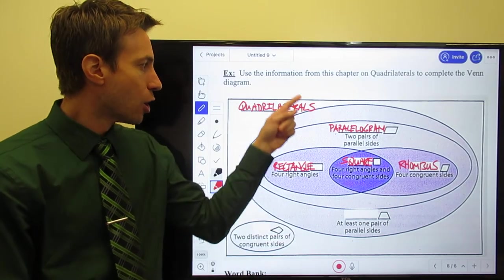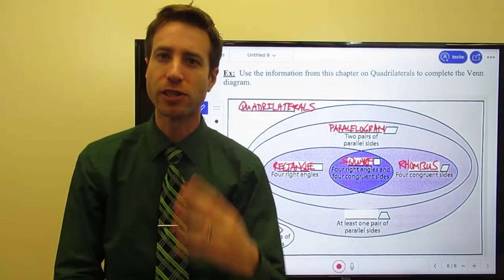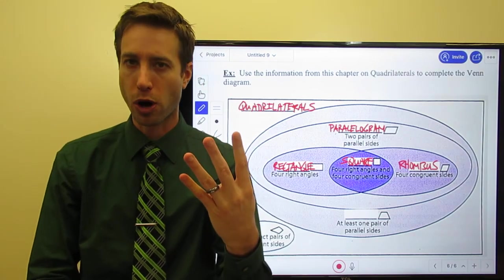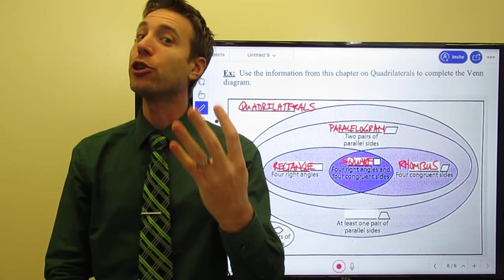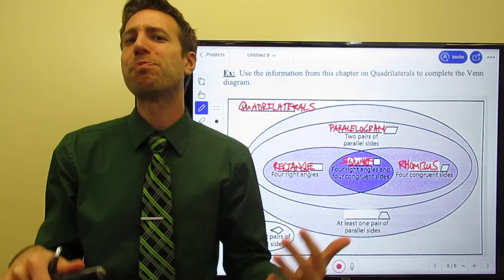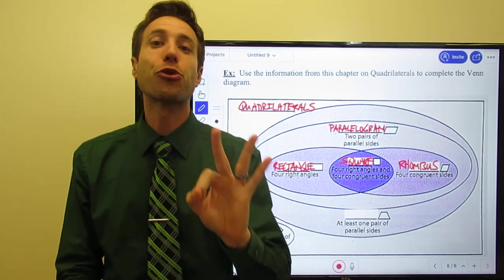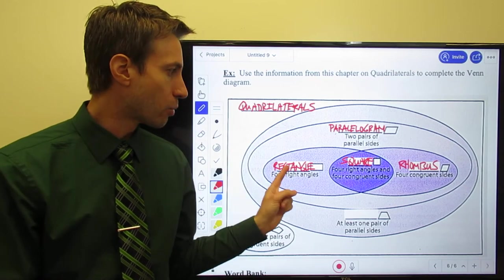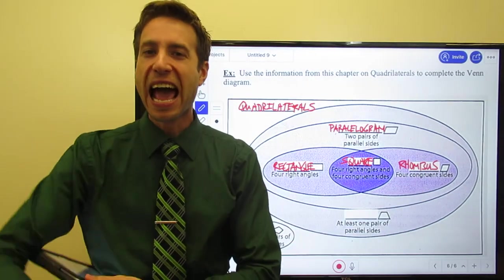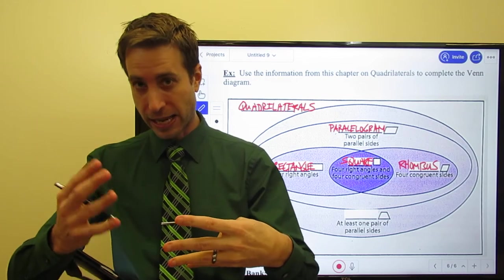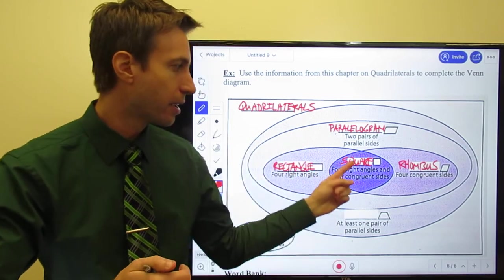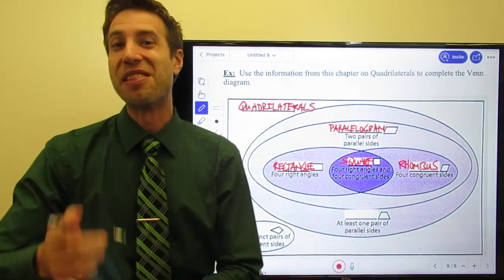So, the point here is simply this. We have our universe and our universe is four-sided figures that we call quadrilaterals. Within that universe, there are some special quadrilaterals we call parallelograms. We looked at three of those parallelograms, rectangles, rhombuses, and then the intersection of those two shapes, rectangles and rhombuses. You put them together and you get a square.